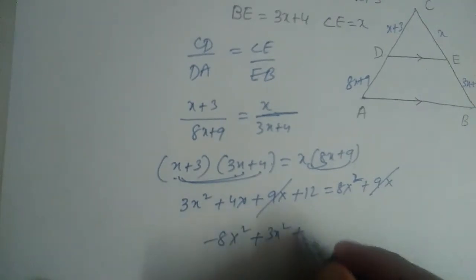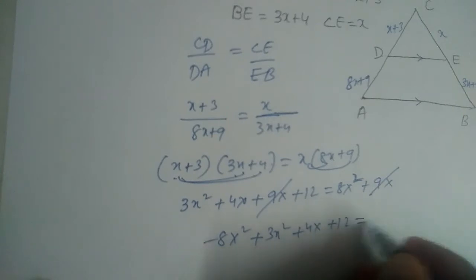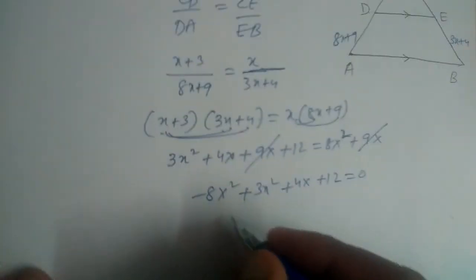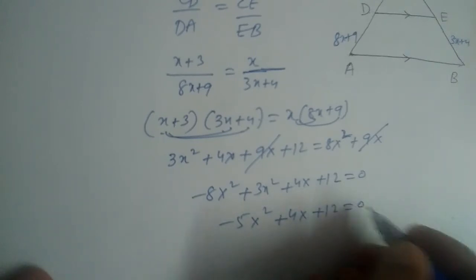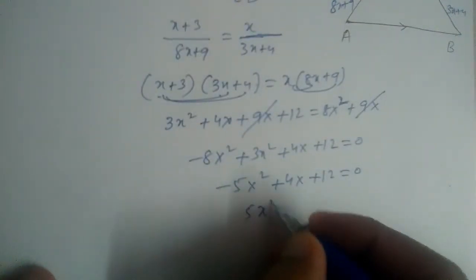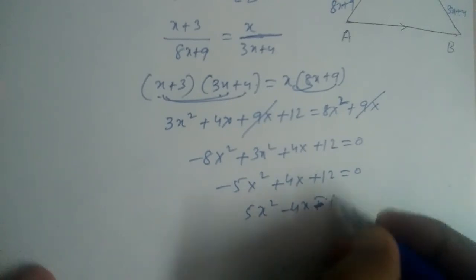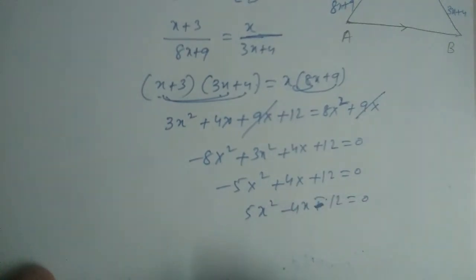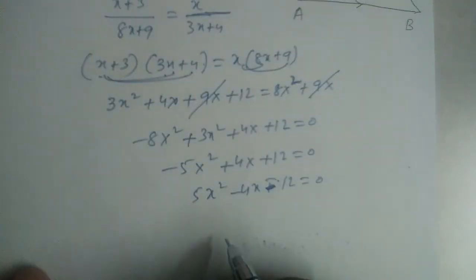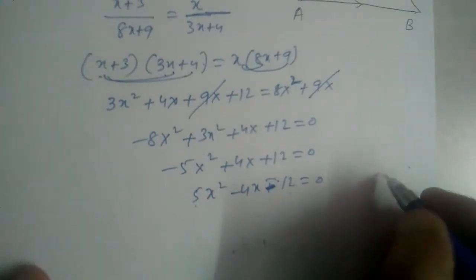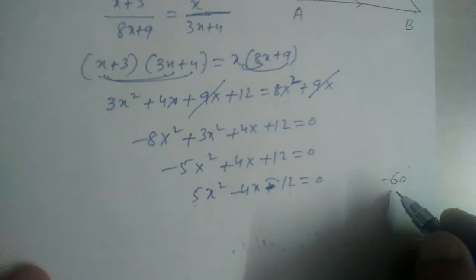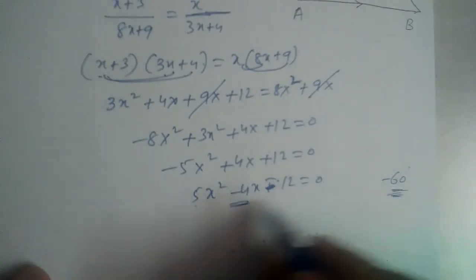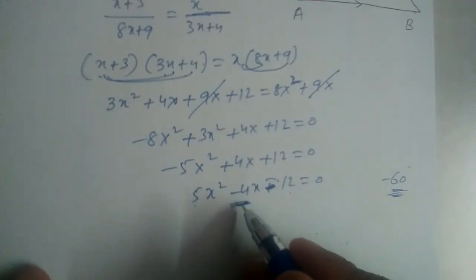So 9x cancels on both sides. Bringing 8x² to the left gives: 3x² − 8x² + 4x + 12 = 0, which simplifies to −5x² + 4x + 12 = 0. Changing signs gives us 5x² − 4x − 12 = 0. Now let us factorize this. The product is 5 × −12 = −60, so we need two numbers whose product is −60.